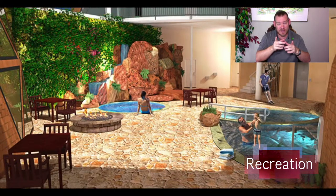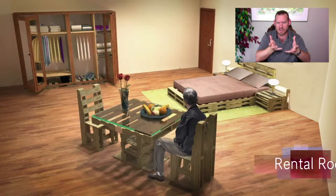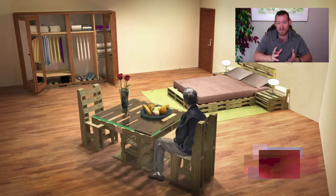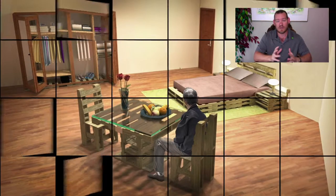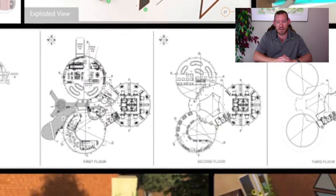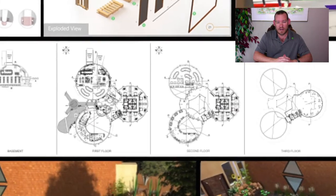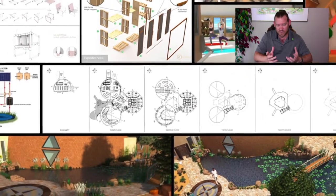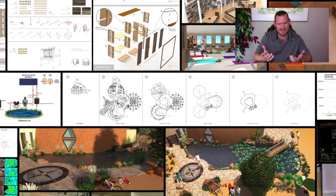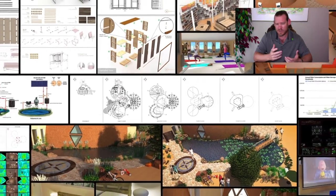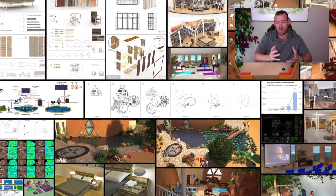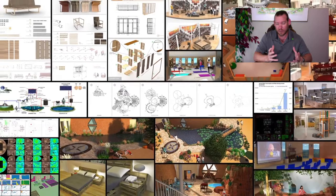Today I want to talk about addressing social inequality with sustainability — how our models are designed to specifically address social inequality with sustainability. And it's really not such a complex idea. If you look at the roots of social inequality — why do we have caste systems? Why do we have people that are treated as less than other people? Why does this exist? And what is it that people really, really want?